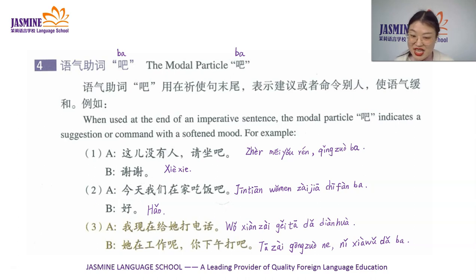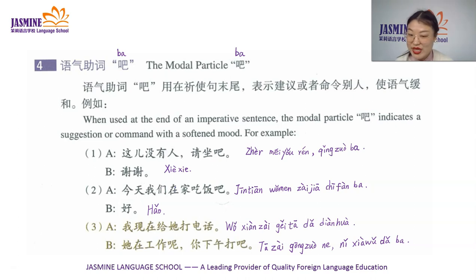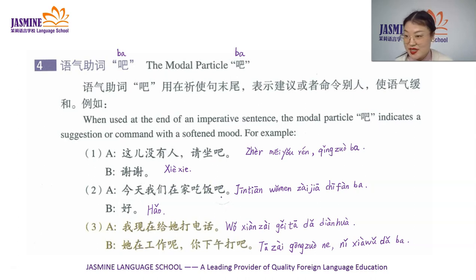Number two: 今天我们在家吃饭吧。 今天 means 'today,' 我们 means 'we,' 在家 means 'at home,' 吃饭 means 'eat.' So we add 吧 at the end of the sentence to make it a suggestion.